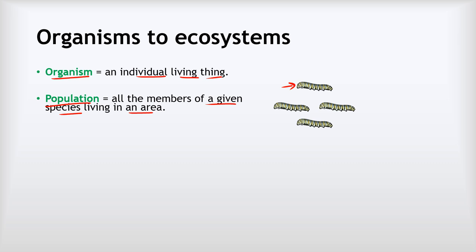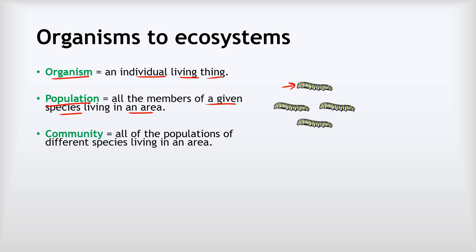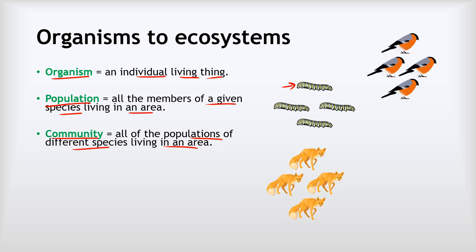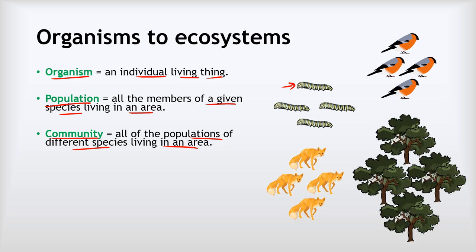You never get just a single living thing existing on its own — you get many different species of living things, and we call that a community. A community is all of the populations of different species living in an area. So in this community we might have some birds — I think those are probably chaffinches — we might have some foxes and some trees, and we've got populations of each of those different species, which combine to form the whole community.